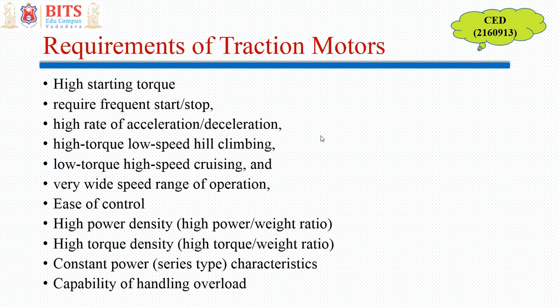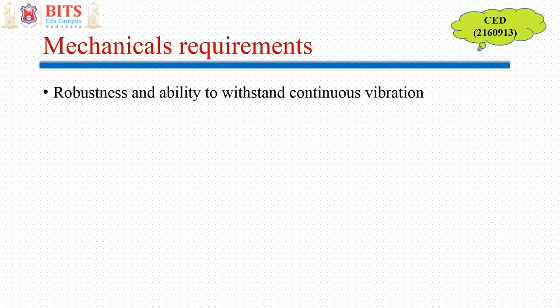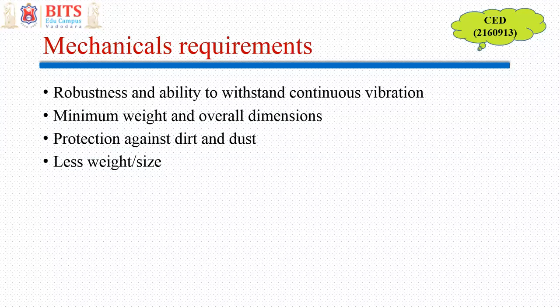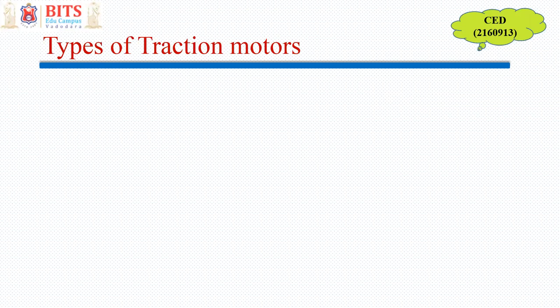The mechanical requirements are: the motor should be robust and able to withstand continuous vibration from moving on tracks, where dirt and vibration are constant. It should have minimum weight and overall dimensions. Protection against dirt, dust, and water is necessary since it is mounted near the wheels at the bottom of the locomotive — waterlogged tracks are also a concern, which is why trains must sometimes be stopped.